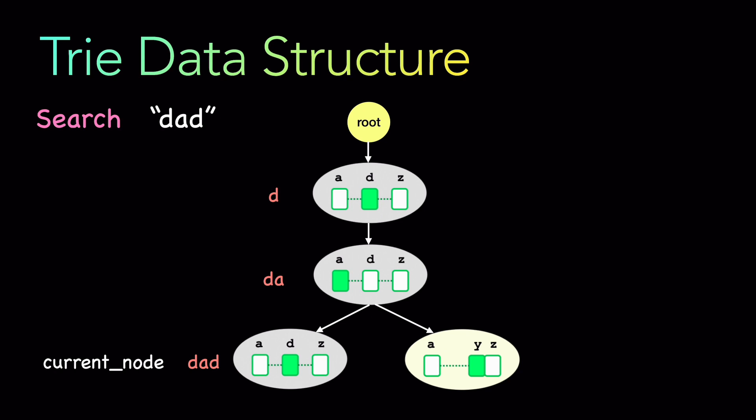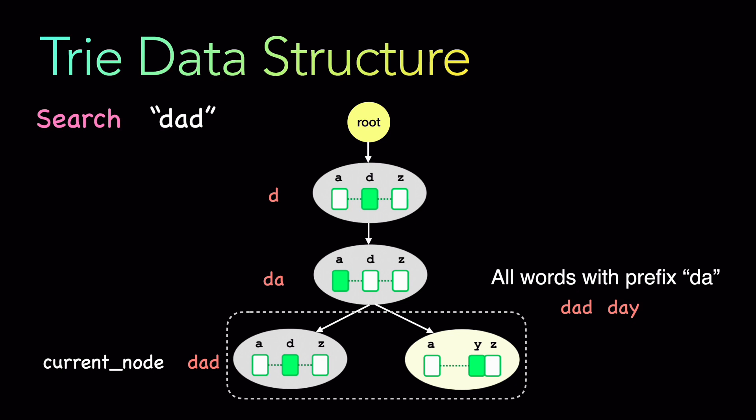Notice another thing - prefix-based searches. All words with prefix 'da', like 'dad' and 'day', are present. If given a problem to find all strings with a common prefix, it is very easy here because you already know the ancestor nodes. At 'da', all children after that prefix are all the words present. So to get all words with that prefix, you just traverse from that point to get the words. That is the search operation.